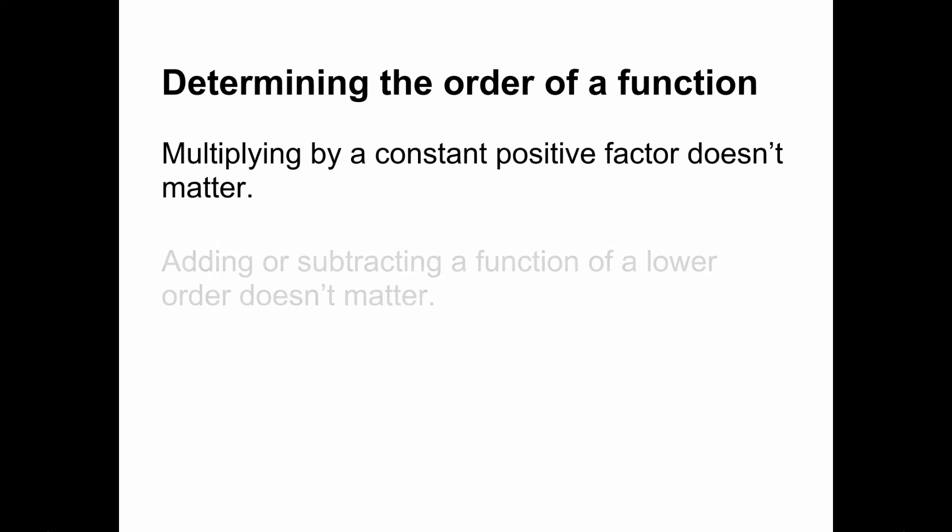To determine the order of a function, we can take advantage of two simple rules. First, multiplying by a constant positive factor doesn't matter. 5n squared and 0.1n squared are both in order n squared. Second, adding or subtracting a function of a lower order doesn't matter. n cubed plus 4n is in order n cubed, because the 4n becomes negligible as n becomes large. With these two rules, we can determine the order of many functions almost instantly.